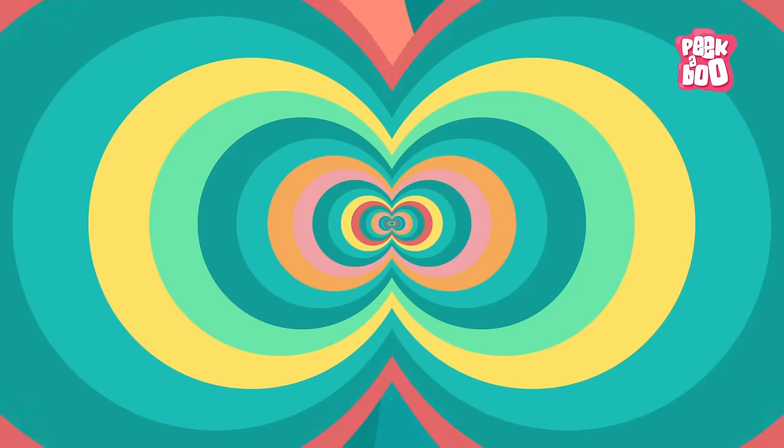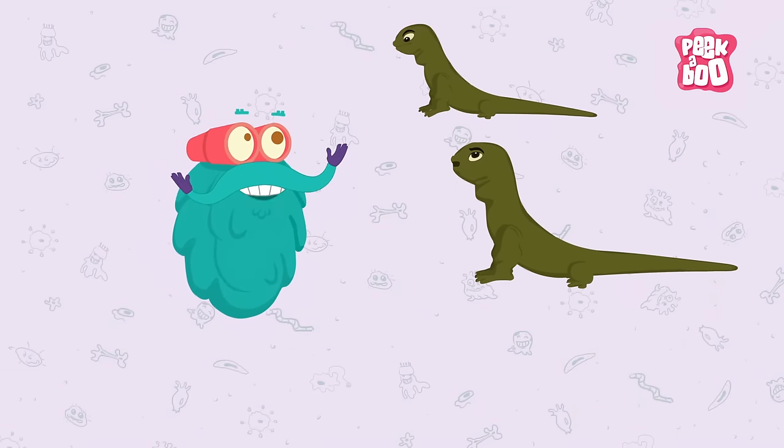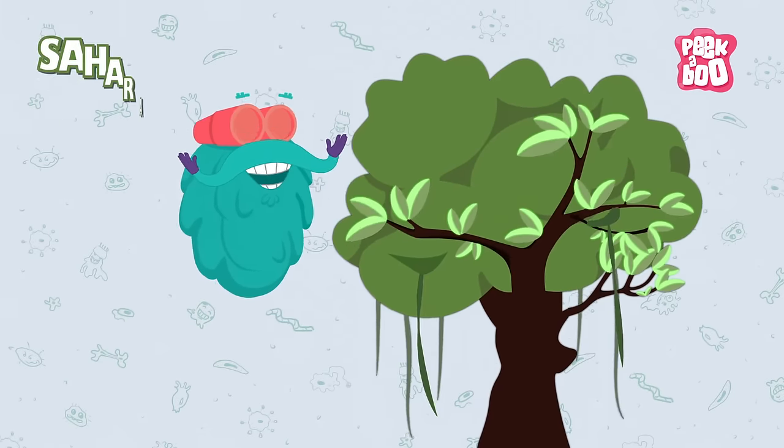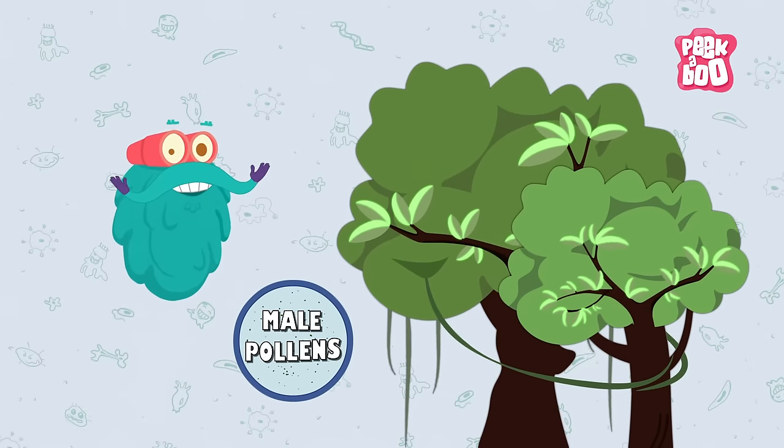Trivia Time! Komodo Dragon can reproduce both sexually and asexually. A tree called Saharan Cypress produces young ones through male pollen only.